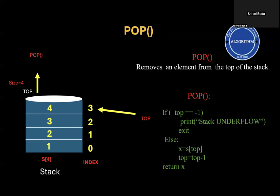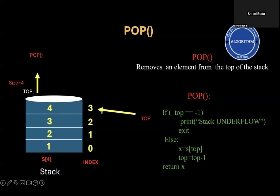Now let us look into the next operation: pop. Pop removes an element from the top of the stack. Let us assume a stack with four slots, all four slots occupied. If you want to remove an element, first mark which element you want to remove — element 4. Then decrement top by 1 and remove element 4. In the algorithm's else block, x is the element to be removed: S of top, where top is pointing to 3, so S of 3 is 4. Decrement top and remove the element.